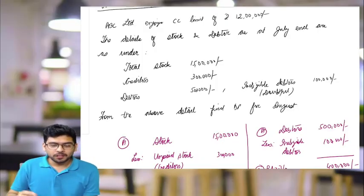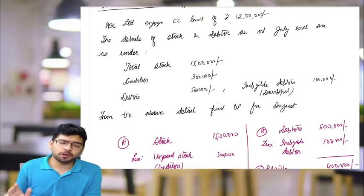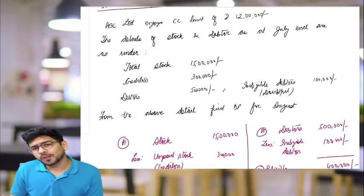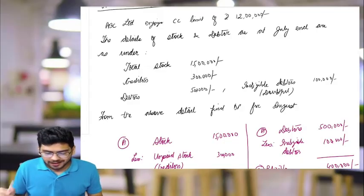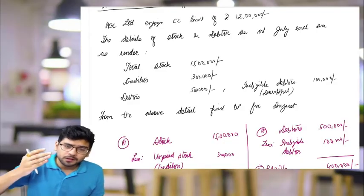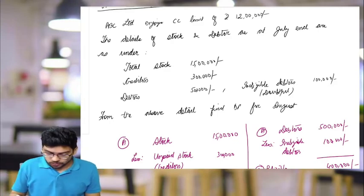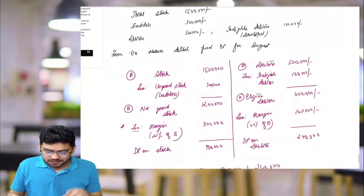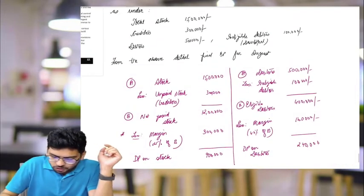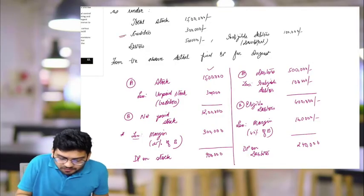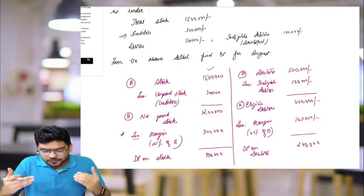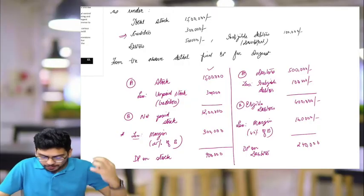calculate the drawing power? From the above detail, find DP for August. How is the bank going to calculate drawing power? I told you drawing power is calculated on the basis of stock as well as debtors. The stock is 15 lakhs. Creditors are 3 lakhs, which means there is some unpaid stock, so I am reducing the